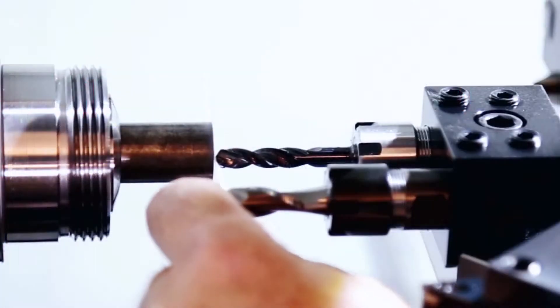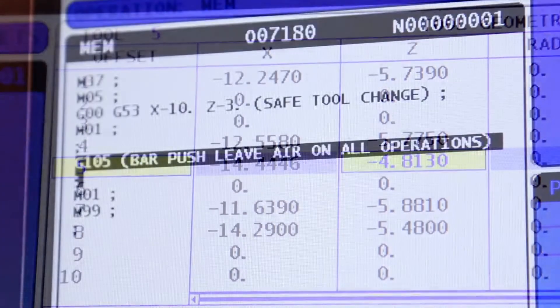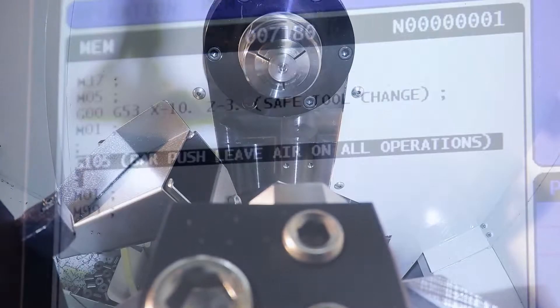We then touch off our tools and add a G105 code to our program just before our M99.